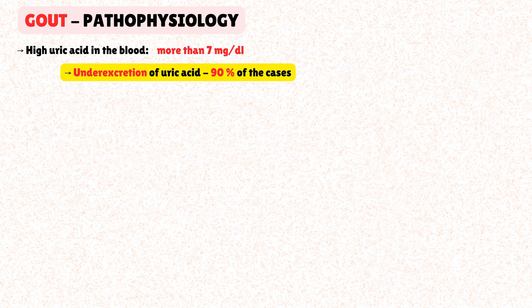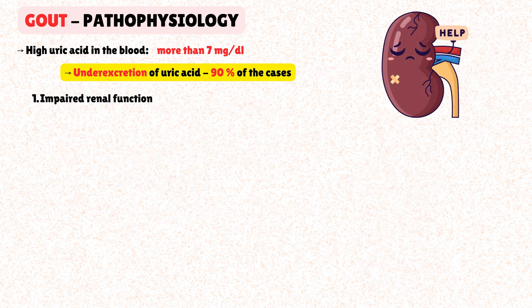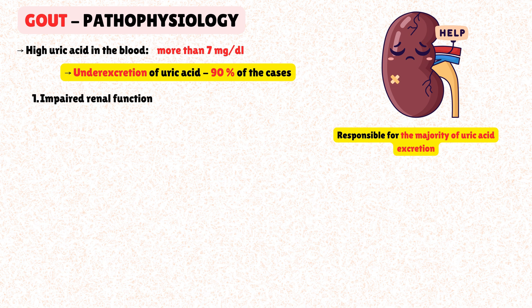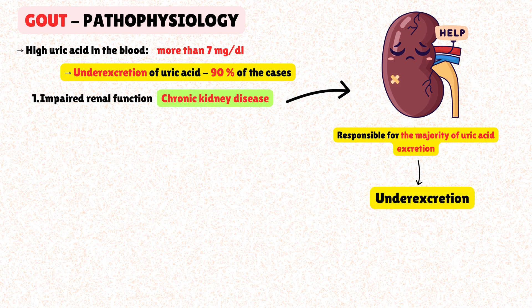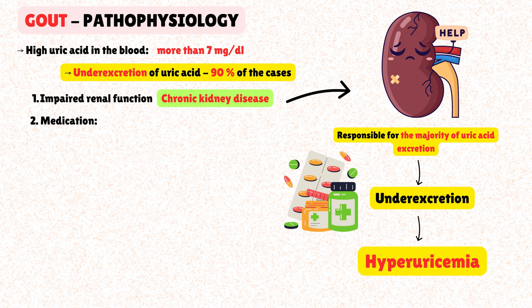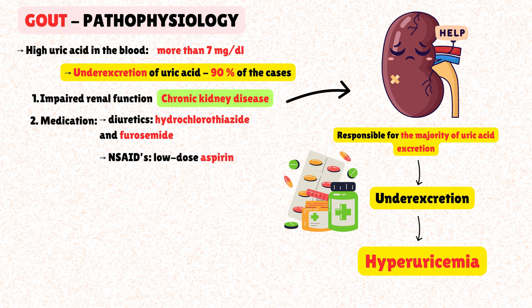On the other hand, impaired renal function is a major risk factor for inadequate uric acid elimination. The kidneys are responsible for the majority of uric acid excretion, so any condition that impairs renal function — most notably chronic kidney disease — can lead to under-excretion of uric acid and subsequent hyperuricemia. Some medications can also inhibit uric acid excretion, including diuretics like hydrochlorothiazide and furosemide, low-dose aspirin, and immunosuppressants like cyclosporine.